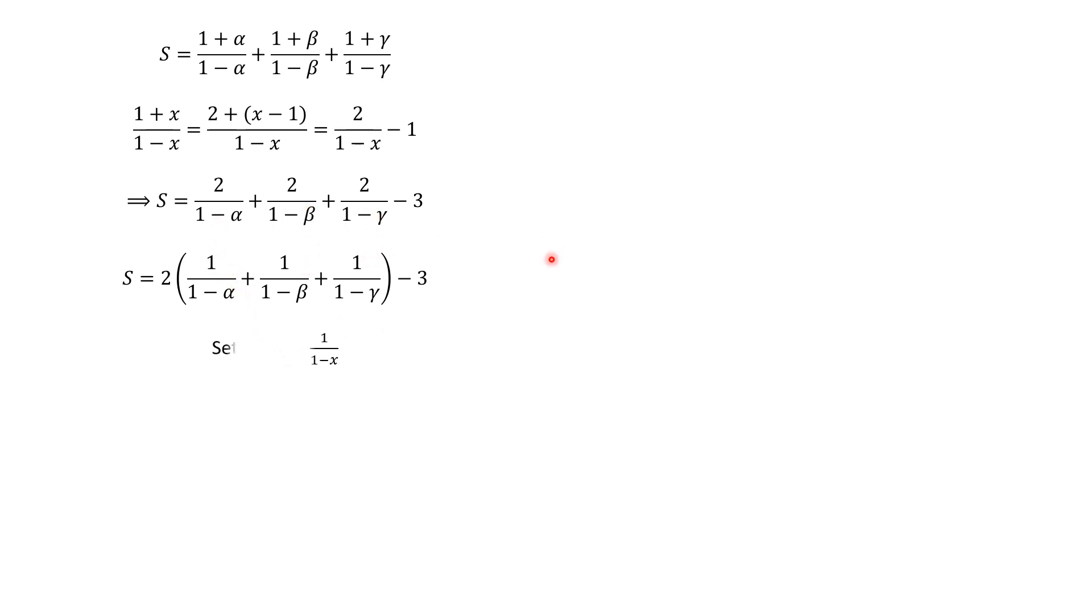We keep the same setup. And then S equals this using this result. So factoring gives us this. Because of this form, we introduce the function F(x) equals 1 over 1 minus x. Actually, what we will do is to build a polynomial with roots F(alpha), F(beta), and F(gamma).